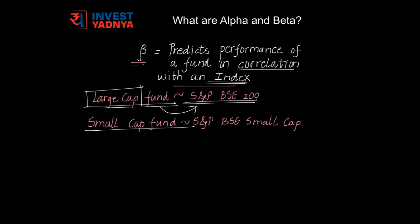Similarly, small cap funds invest only into small cap stocks. There is an index called S&P BSE Small Cap, and such funds could relate to this index. Don't worry — you don't have to find out the index your fund correlates to, because such data is readily available in fund fact sheets and on various investment sites. What we need to understand is what is the beta value of our fund in correlation with the index, and what does it imply.